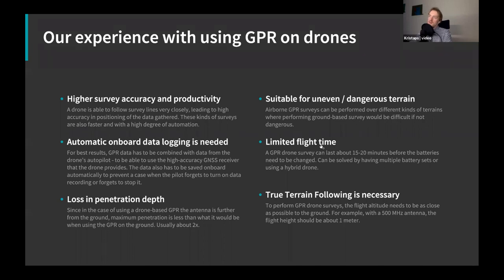Another disadvantage is that flight time is somewhat limited — about 15 to 20 minutes depending on configuration and GPR weight. This can be solved by having multiple battery sets: our UgCS flight planning software supports battery changes, so you can fly back, change the battery, and restart from the last location. Another solution is using a hybrid drone — companies like AtRC in Finland have developed hybrid drones with about two hours of flight time.